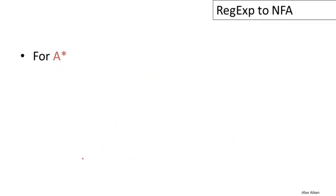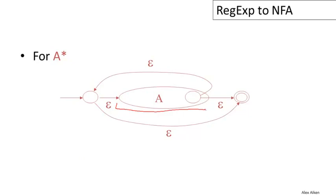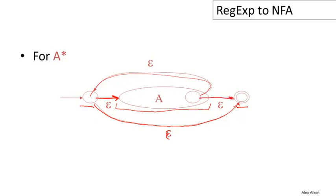Finally, the most complicated case: iteration, A star. We embed the machine for A, add a new start state and a new final state. Epsilon is always in the language of A star, so we add a direct transition from the new start state to the new final state to accept the empty string. Otherwise, we make an epsilon transition to the start state of A, and from the final state of A we can loop back to the start state of the whole machine as many times as we like. When we decide to stop, we make a transition from A's final state to the new final state. This machine recognizes zero or more strings in the language of A.